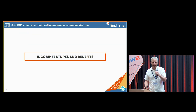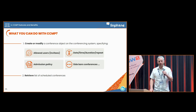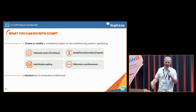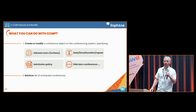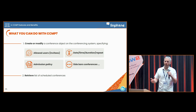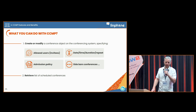What you can do with CCMP is create a conference on the conferencing service: you specify user invitees, date, time, duration, repetition, and you specify an admission policy — for example, whether the organizer has to manually approve entry for people joining the conference. There are actually many parameters made possible by this protocol.